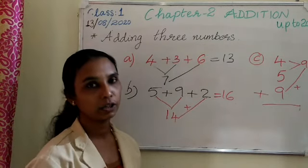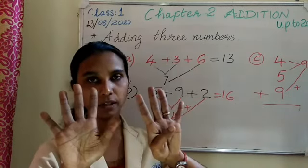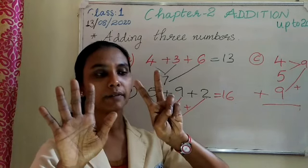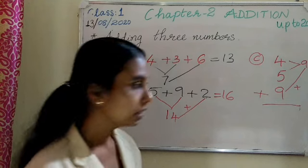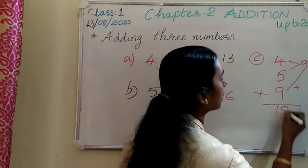What is 9 plus 9? 9 in your mind, 9 on your finger. After 9, 10, 11, 12, 13, 14, 15, 16, 17, 18. Then write the sum is 18.